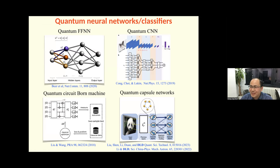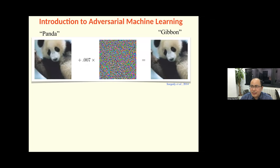Along this direction, there are also many more works — like quantum feedforward neural networks and quantum circuits. This kind of circuit was invented by the Harrow group and the Wiebe group. There's also quantum convolutional networks, etc. We wrote a quite comprehensive review on quantum neural networks and quantum classifiers. If you're interested, you can refer to that review for details.